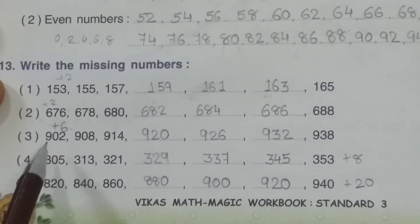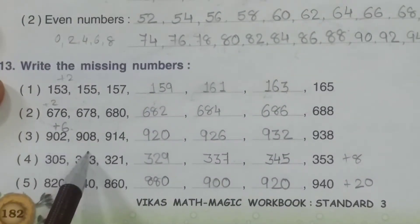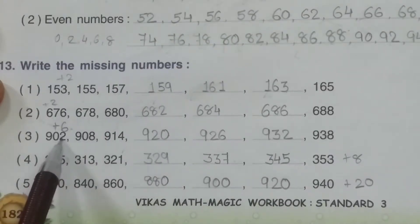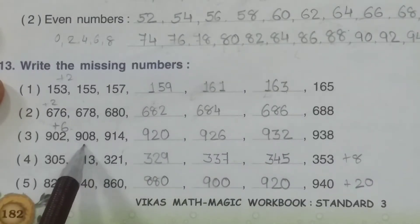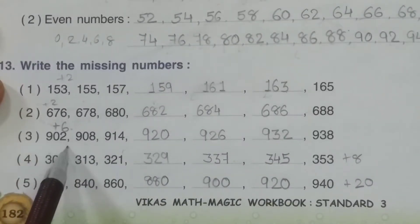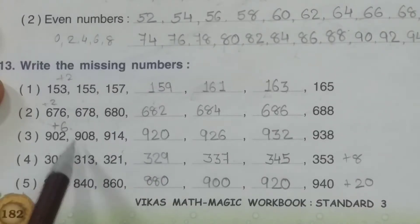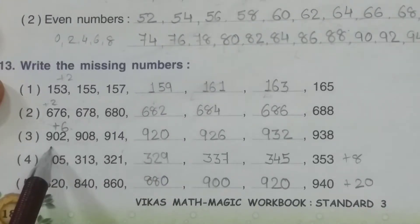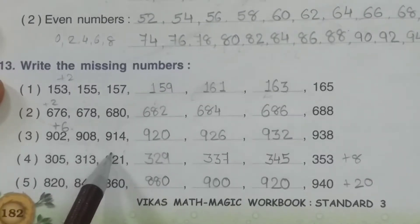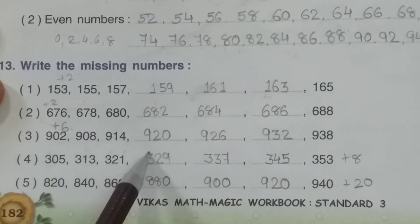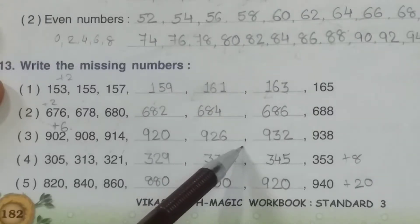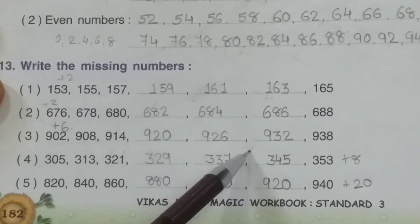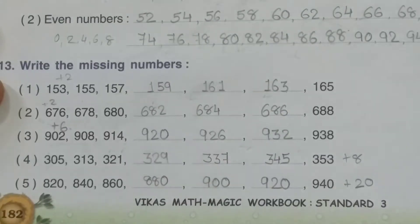Now see the third one: 902, 908, 914. See the difference — how you find out: 908 minus 902 = 6. And the numbers are increasing, so plus. So, 902 plus 6 = 908, plus 6 = 914, plus 6 = 920, plus 6 = 926, plus 6 = 932, plus 6 = 938.